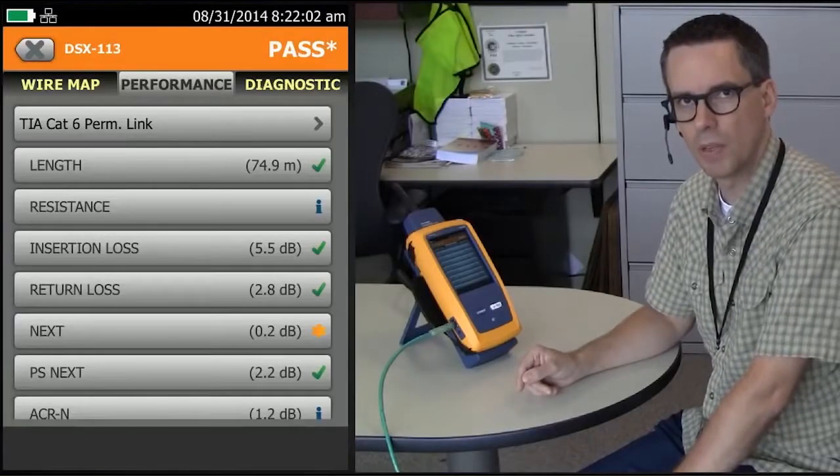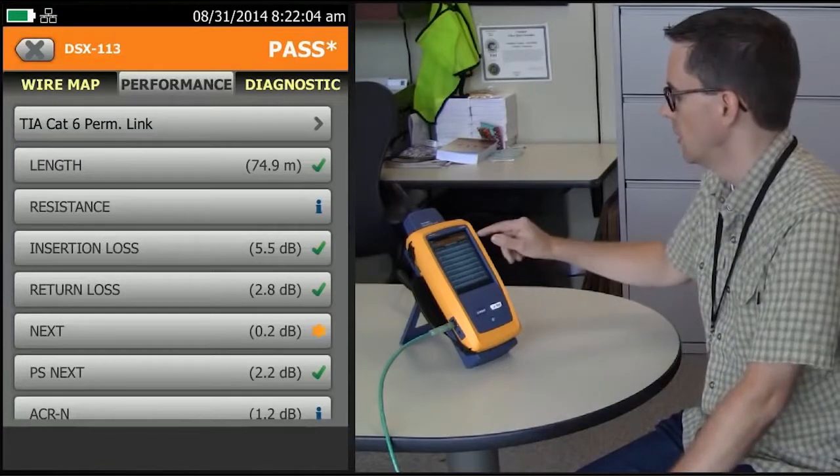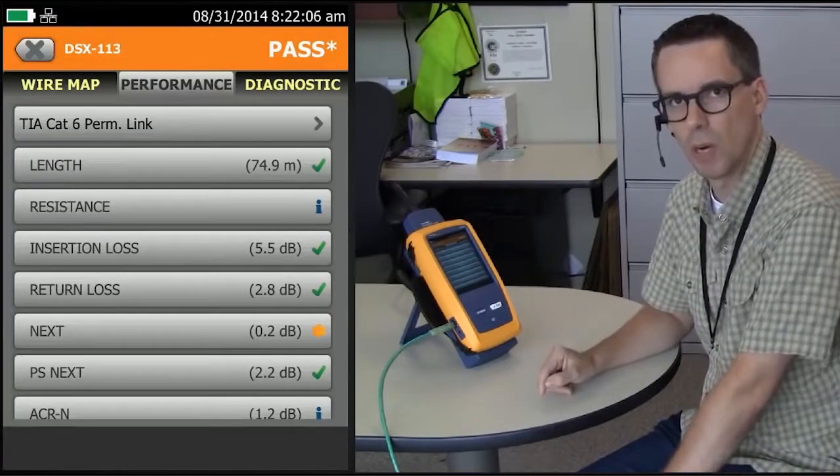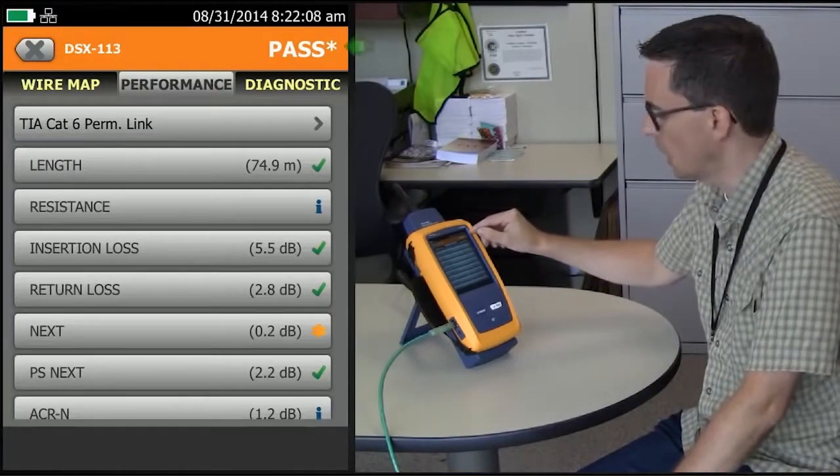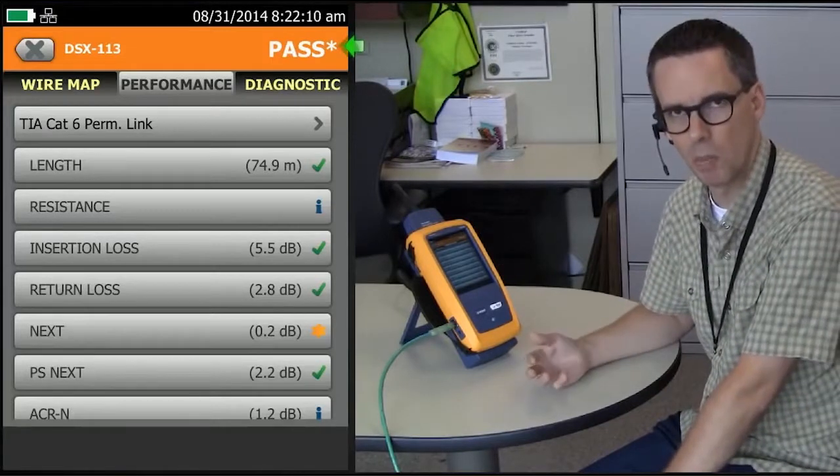I know the title of this video said when the crosstalk failed, and you actually see pass in the top right-hand corner here, but you'll see it's got an asterisk next to it, which means it's a marginal pass.